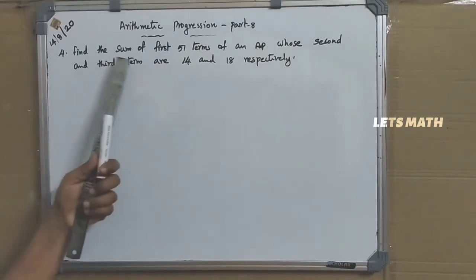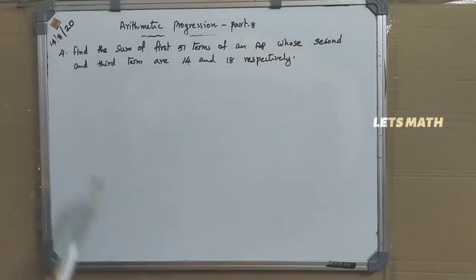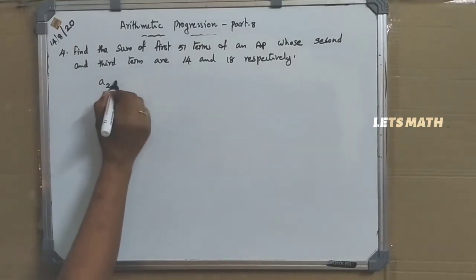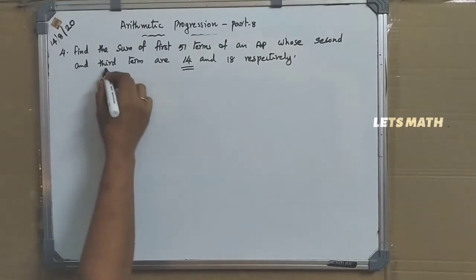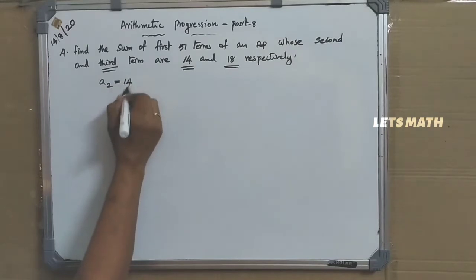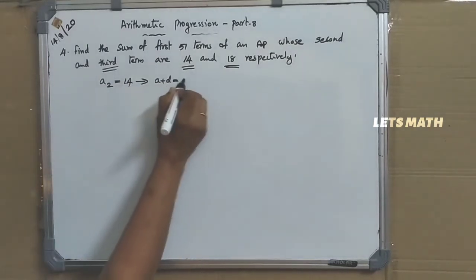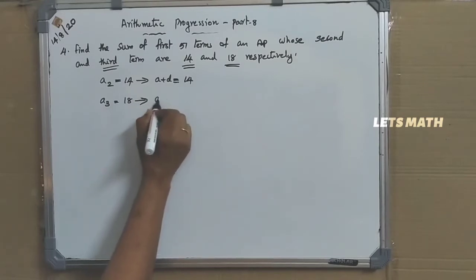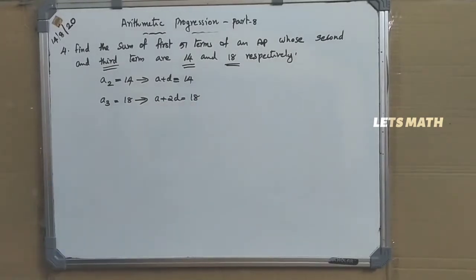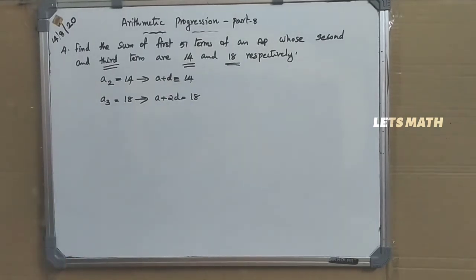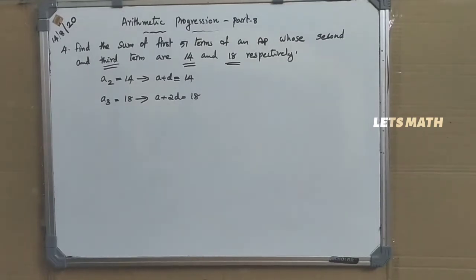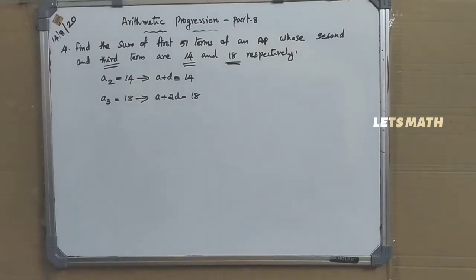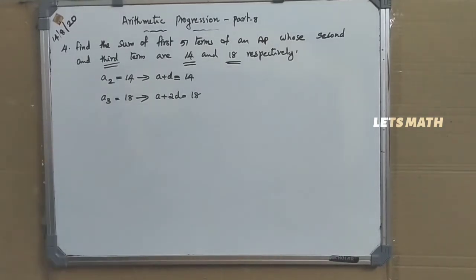Next question: find the sum of first 51 terms of an AP whose second and third terms are 14 and 18 respectively. Second term A2 equals 14, meaning A plus D equal to 14. Third term A3 equals 18, meaning A plus 2D equal to 18. Solving both equations we can find D, then substitute to find A, and then find the sum of 51 terms with N equal to 51.